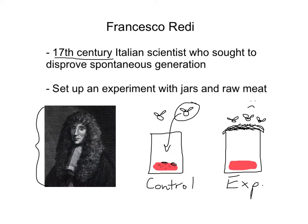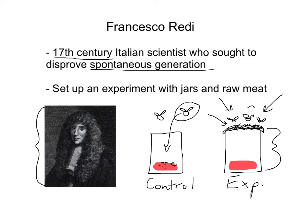But this didn't completely disprove spontaneous generation. There were skeptics at the time who said: when you did this jar with the covering — with the gauze or mesh on top — you prevented some of the life force in the air from getting inside, and because you prevented this life force from getting to the meat, that prevented the maggots from emerging. He was convinced of biogenesis, but there were still skeptics in the 1600s.